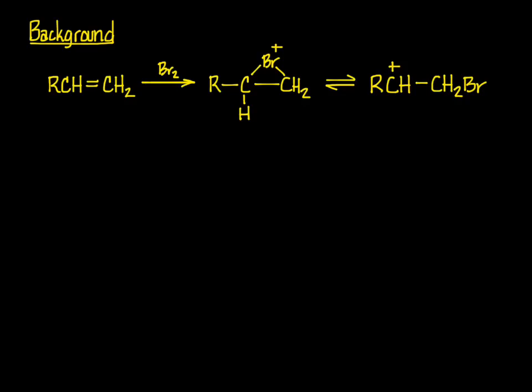Alkene bromination is a very general organic reaction, and study of this reaction has provided detailed insight into its mechanism. One of the principal points at issue is: if there is a positively charged intermediate, is it a bridged bromonium ion, a carbocation, or an equilibrium mixture of the two?